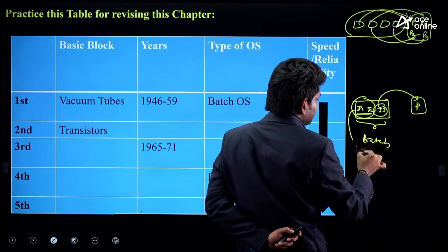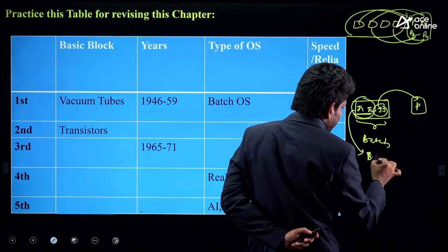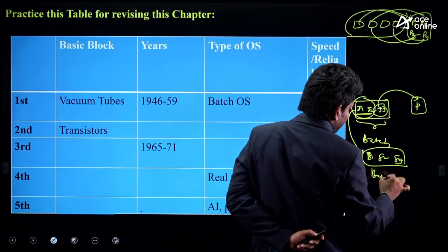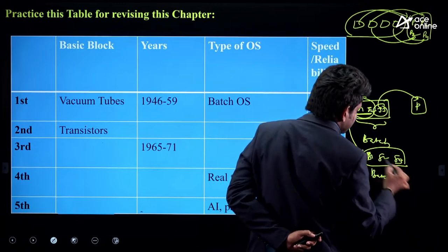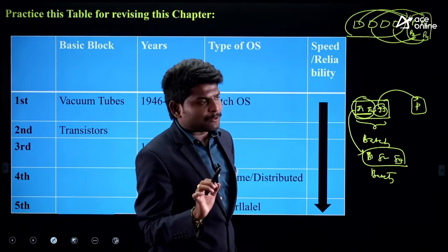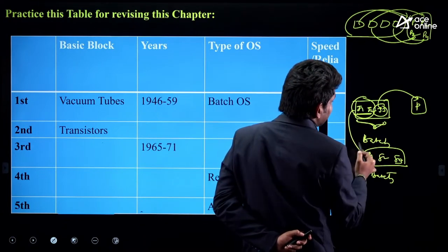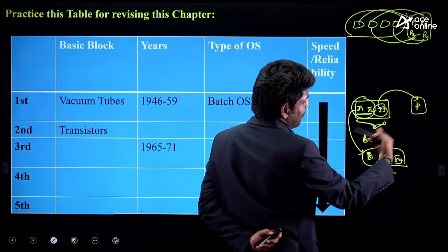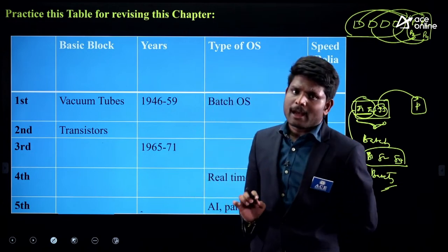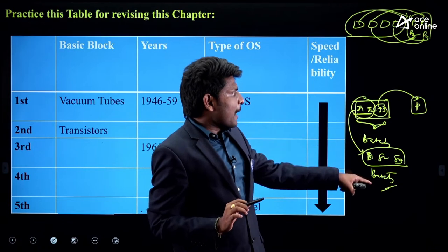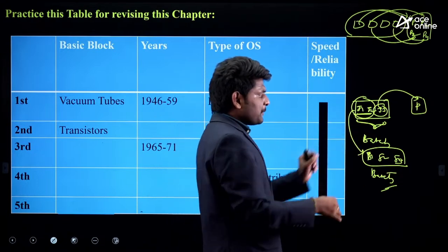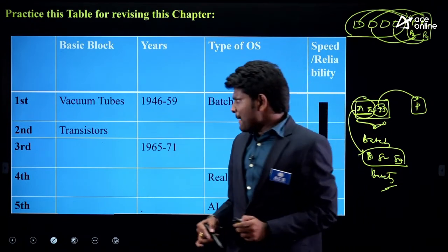Based on the type of job or priority of the job, jobs were grouped — and each group was called a batch. That's why this particular operating system is known as Batch Operating System. We combine all jobs based on type or priority, call each group a batch, and hence the name 'Batch Operating System.'